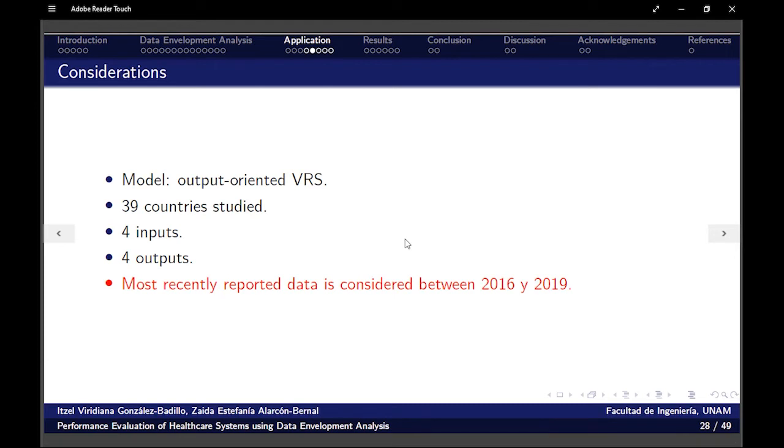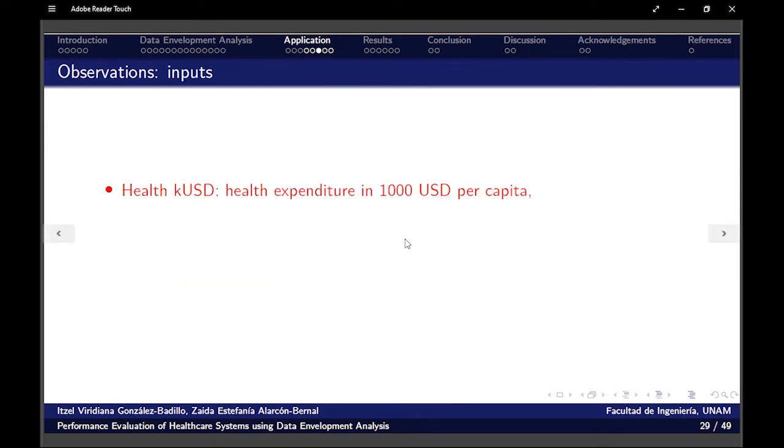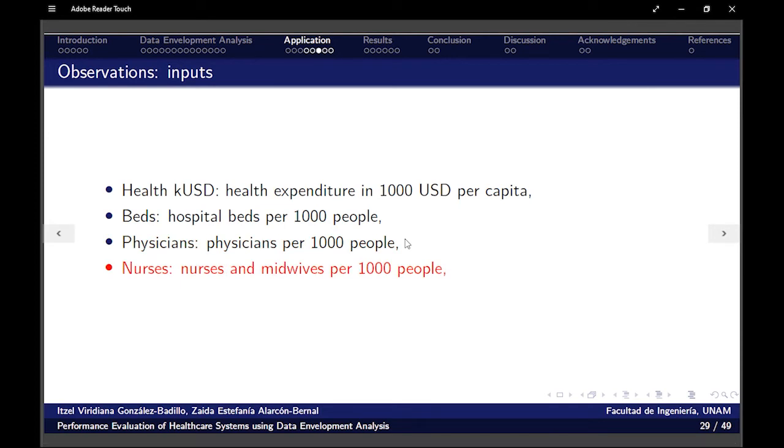The most recently reported data is considered between 2016 and 2019. Health expenditure in thousands of US dollars per capita. We used also the hospital beds per thousand people, the number of physicians per thousand people, the number of nurses and midwives per thousand people.